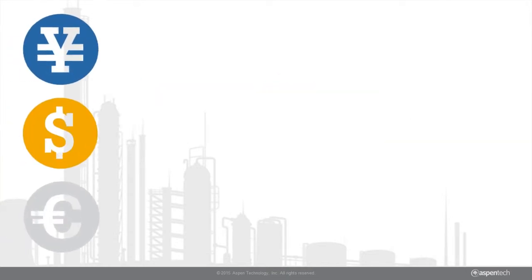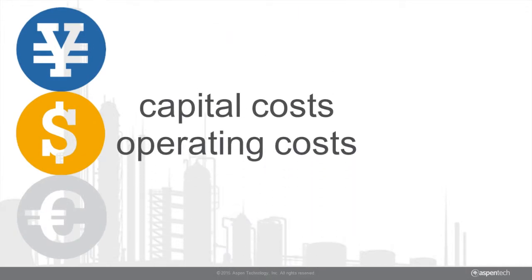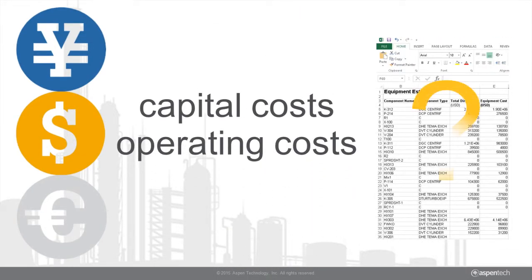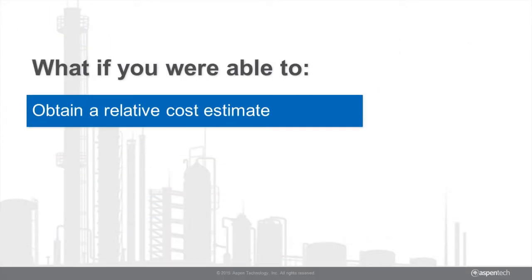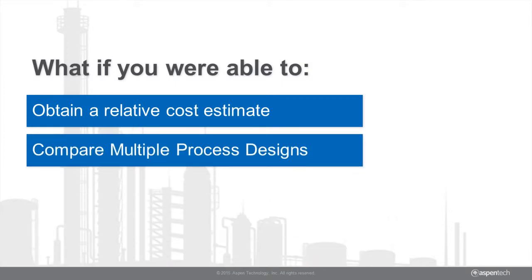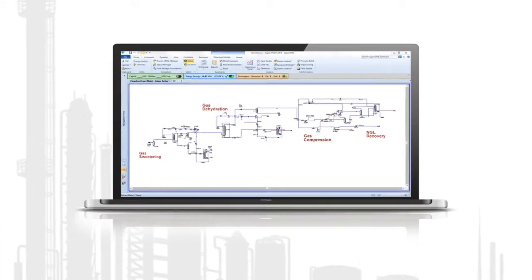Ideally, the one with the best return on investment, considering capital and operating costs — but you're not a cost estimator. So what if you were able to obtain relative cost estimates, use them to compare multiple process designs, and then gain alignment with estimators by passing that information to them to further develop and increase the accuracy of the estimate later on? The solution is Activated Economics in Aspen Hysys.